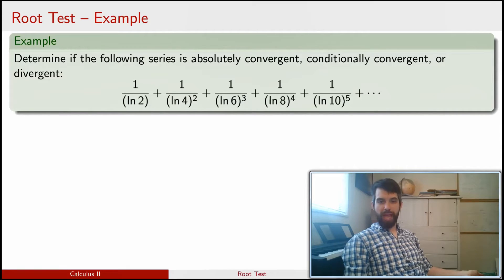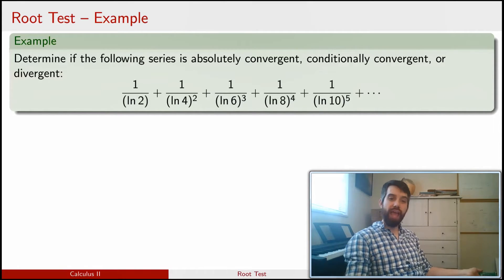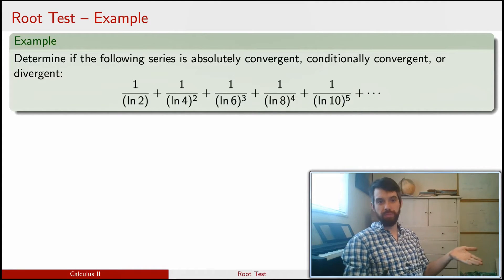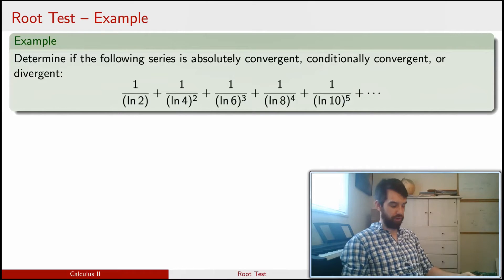So here I have an example, and I've kind of disguised it because I haven't given you exactly what the a_n is. I just wrote out the first few terms, and so we have to determine from the pattern of the first few terms what our a_n actually is going to be.